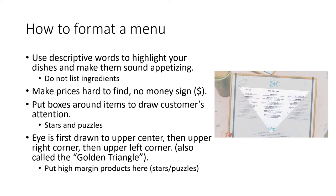Another thing you could do is use the golden triangle, which is where the customer's eyes are drawn first. They're first drawn to the center, then the upper right-hand corner, and then the upper left-hand corner. So you should put the high margin products like the stars and the puzzles in the golden triangle to draw your customer's attention to these.